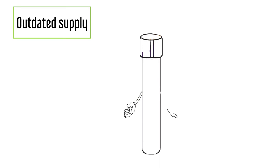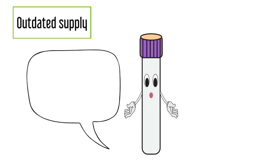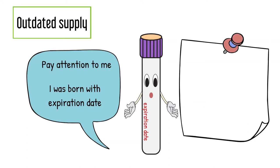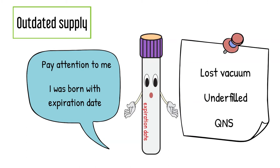Outdated supplies. This mostly refers to tubes. Make it a good habit to check your phlebotomy cart every day at the beginning of the shift to make sure that you have supplies that are not expired. An expired tube can lose vacuum and lead to underfill, which leads to QNS and will be rejected for the reason we talked about earlier.